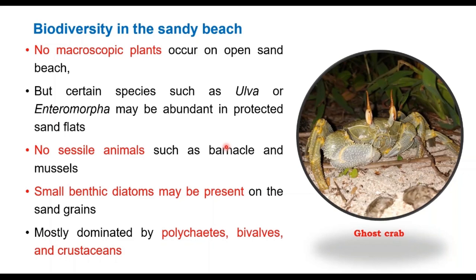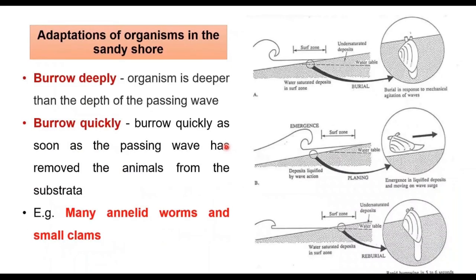These are green seaweeds which can be abundant on fine sand beaches but not coarse sand beaches. We can't find any sessile organisms such as mussels and barnacles. Benthic diatoms could be present in the sand, and in fine beaches the interstitial spaces can hold water, so in those areas we can see some benthic diatoms. It is mostly dominated by worms, crustaceans, and bivalves.